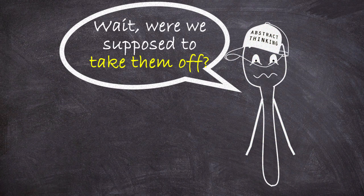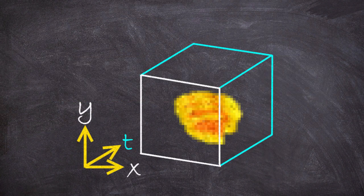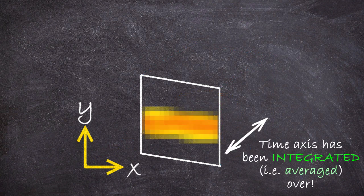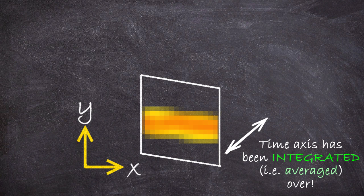Now let's put our abstract thinking hats back on and think about what has happened here. Basically the entire time axis of the data volume has been averaged over. In fancy talk we say that the final image has been fully temporally integrated, which means we took an average along the entirety of the time coordinate.